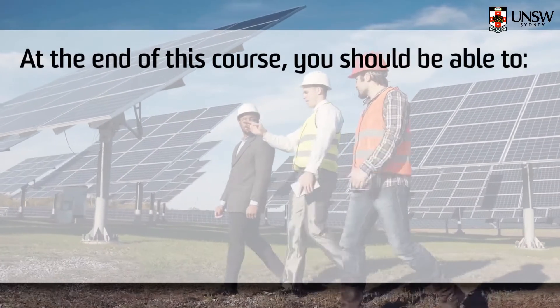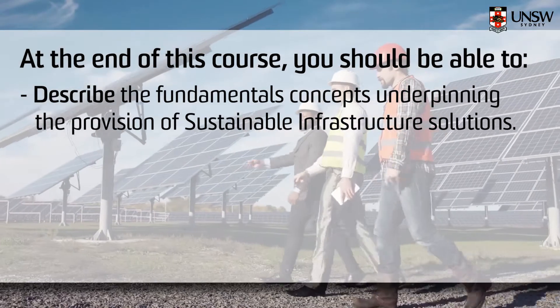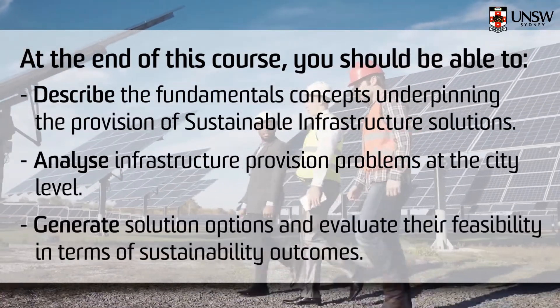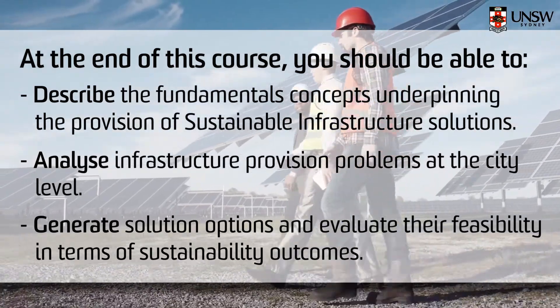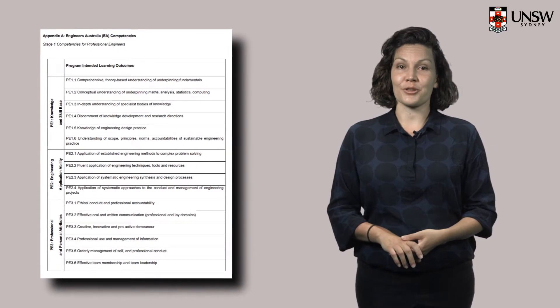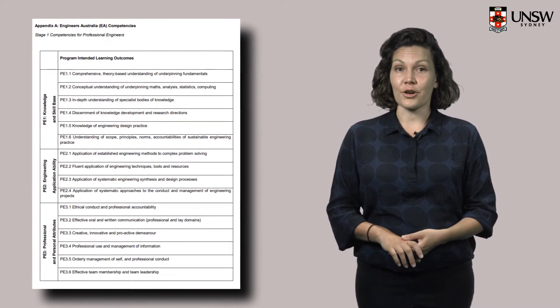To do well in this course, you will need to review some of the contents of your previous engineering courses — mainly what you have studied in transport engineering, water and wastewater engineering, waste engineering, and energy-related courses in your undergraduate studies. At the end of this course, you should be able to describe the fundamental concepts underpinning the provision of sustainable infrastructure solutions, to analyse infrastructure provision problems at the city or regional level, and to generate solution options and evaluate their feasibility in terms of sustainability outcomes. Please go to the course outline document in Moodle and read the course learning outcomes, and also have a look at how they relate to the Engineers Australia competency standards.